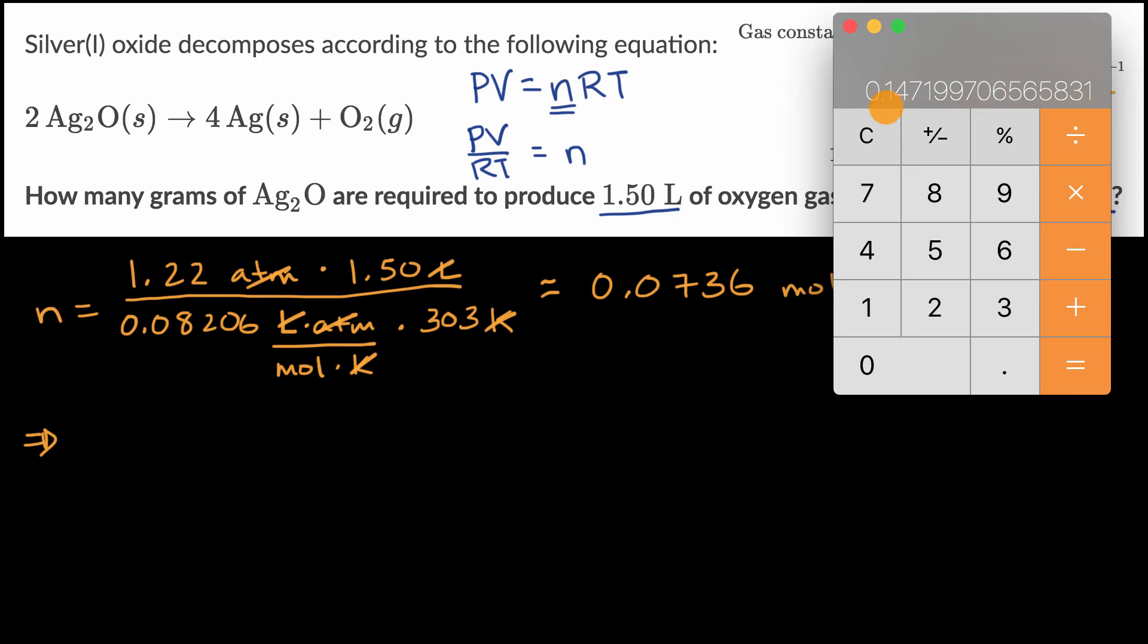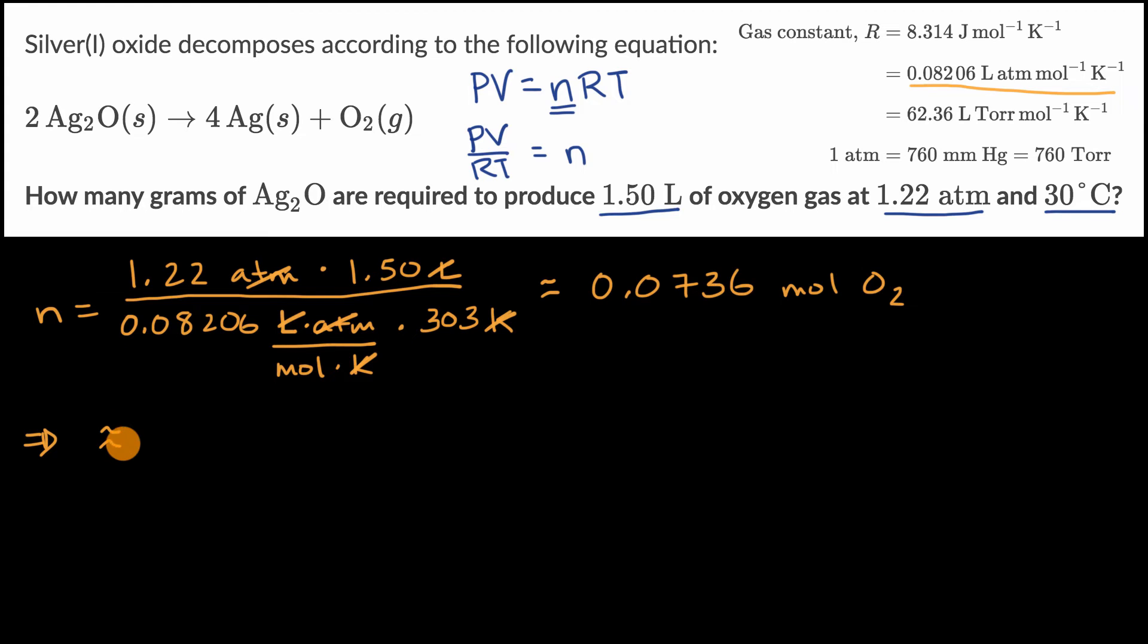Multiply by 2 to get, with three significant figures, 0.147 moles of silver oxide that we need.